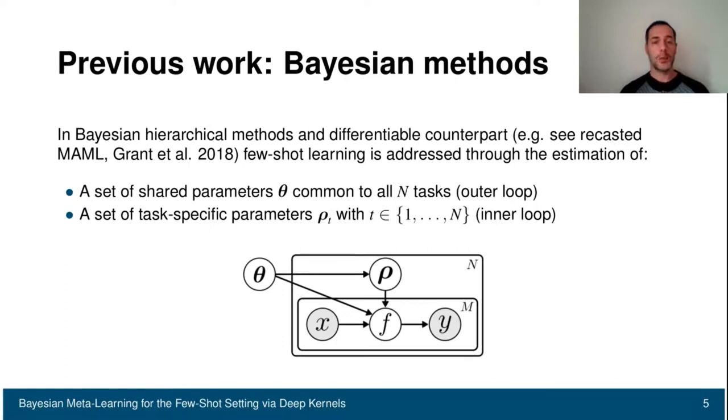You can see here the probabilistic graphical model for the regression case, where we have the set of shared parameters theta outside of the plate, rho inside the plate for each one of the tasks, and then we have x and y being scalar input and output, and f the underlying generative hidden function we want to estimate.